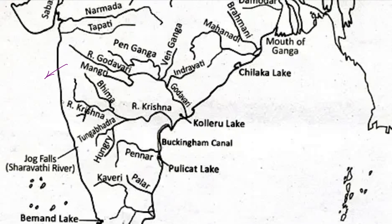Hi everyone, my name is Vinita and in this session we will discuss the peninsular river system. The peninsular rivers are either west-side flowing or east-side flowing. The west-flowing rivers form estuaries, and because their velocity is not very high, their load-carrying capacity is very low, because the gradient is very low.